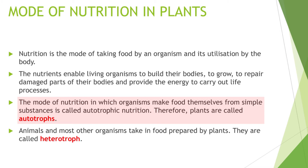Those organisms that make their own food are called autotrophs, and this process is called autotrophic nutrition. Autotrophic nutrition mein aate hai apke plants, kyunki plants jo hai apna food kisi se bhi kabhi lete nahi — woh doosron ko food dete hai.